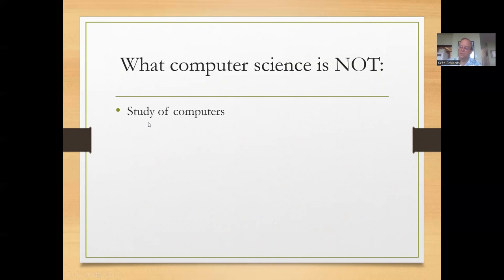It's not necessarily the study of computers. Computers are certainly useful tools. But computer science is no more the study of computers than chemistry would be the study of beakers and test tubes, or physics and astronomy would be the study of telescopes or devices to perform physics experiments.